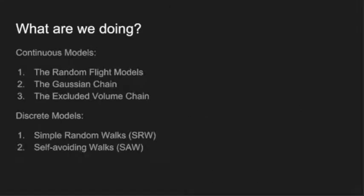First, what are we doing? In my research, I learned both continuous and discrete mathematical models of polymer dynamics. The continuous models concentrate on the dynamics of highly flexible polymeric liquids in the equilibrium state. They are the random flight models, the Gauss chain, and the excluded volume chain. The discrete models are simple random walks and self-avoiding walks. Only the random flight models will be explained in detail later due to the limitation of time.